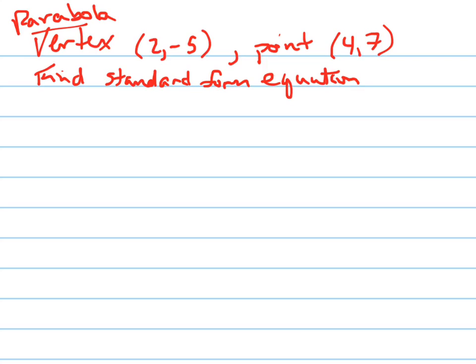Standard form, to remind you, is the one that looks like this: Y equals X minus H squared plus K. There's actually a number out in front of that as well, A times X minus H squared plus K. That's standard form.